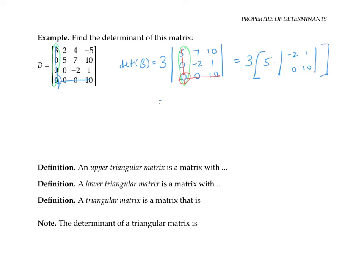I just have three times five times that two by two determinant. The two by two determinant is negative two times ten minus zero. So ultimately I'm getting three times five times negative two times ten, which is negative 300. More interestingly, the determinant is just the product of the entries on the diagonal — and that's no coincidence. It came from expanding along columns with almost all zeros.